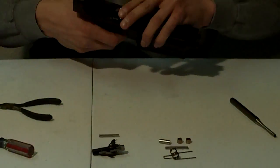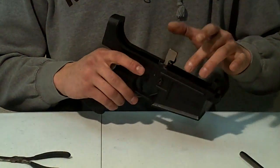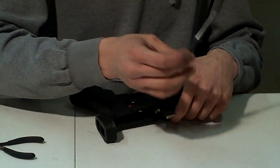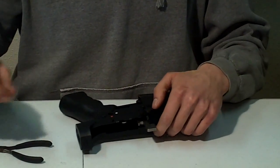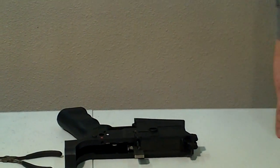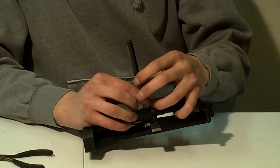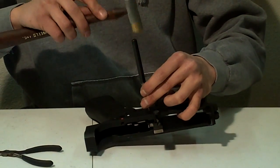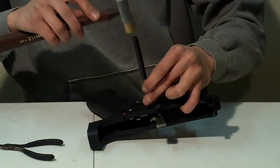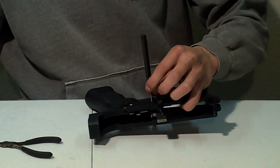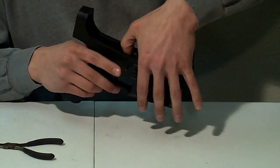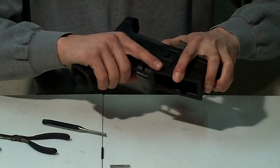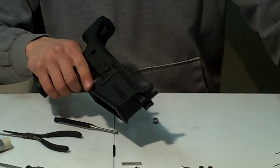All right, once you've removed your safety selector go ahead and use a small punch. That's the wrong one. Somebody switched them out on me. All right, I have the right punch to go ahead and tap out the factory hammer pin. Put slight pressure on the hammer to keep it in place. Release the hammer and set it aside.